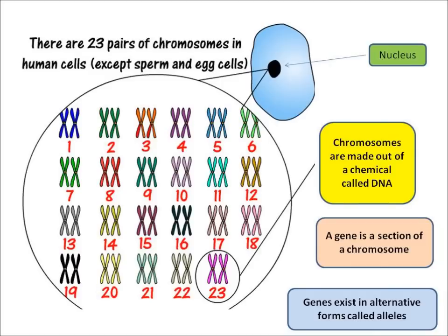We're looking at one of my cells here, and inside the cell is a nucleus. In that nucleus of my cell there are 46 chromosomes in one of my normal cells — 46 chromosomes. And chromosomes are made out of a special chemical called DNA.